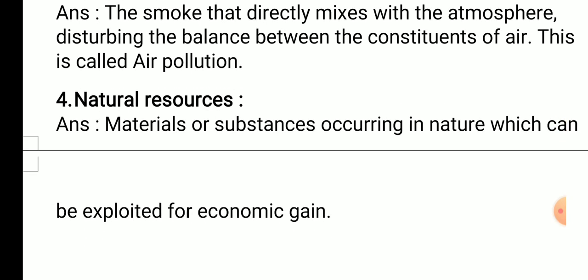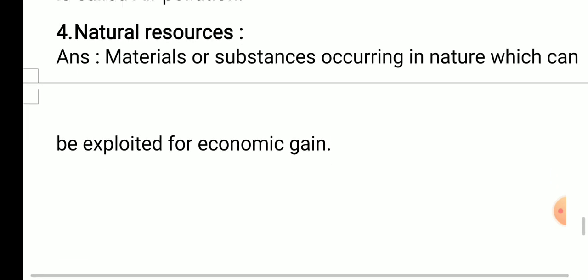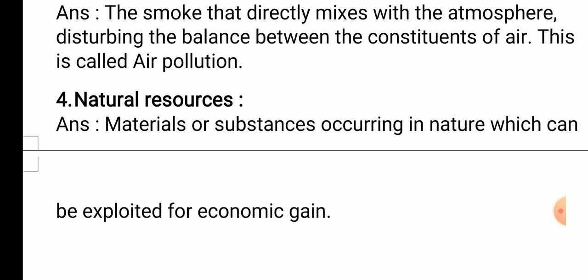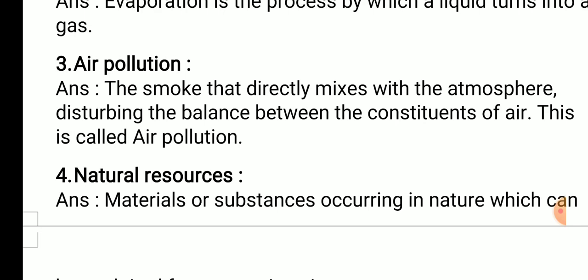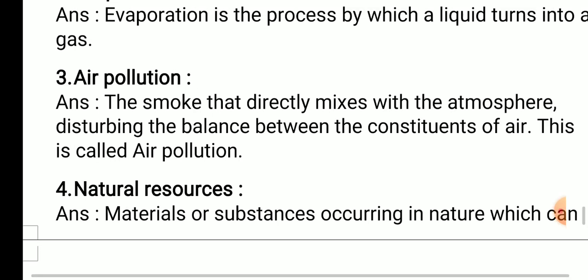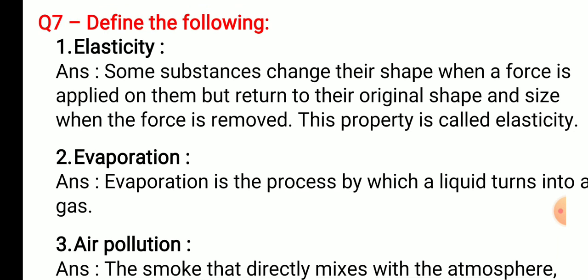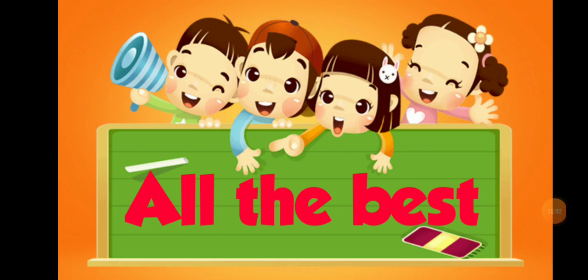Fourth — natural resources. Answer: materials or substances occurring in nature which can be exploited for economic gain are called natural resources. With this we have finished revision number one. I hope everyone has understood today's revision. Please do write this revision in your science book.